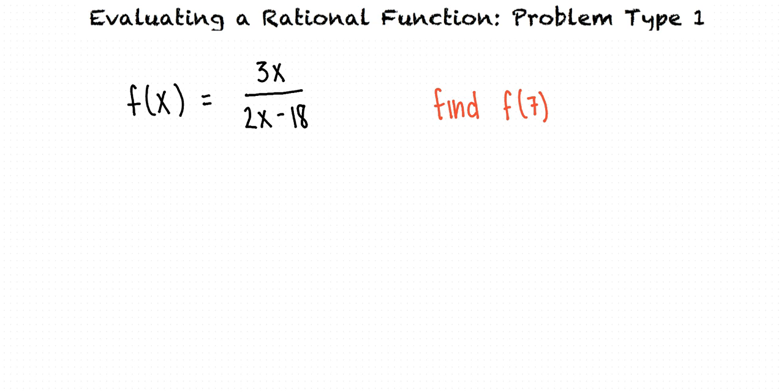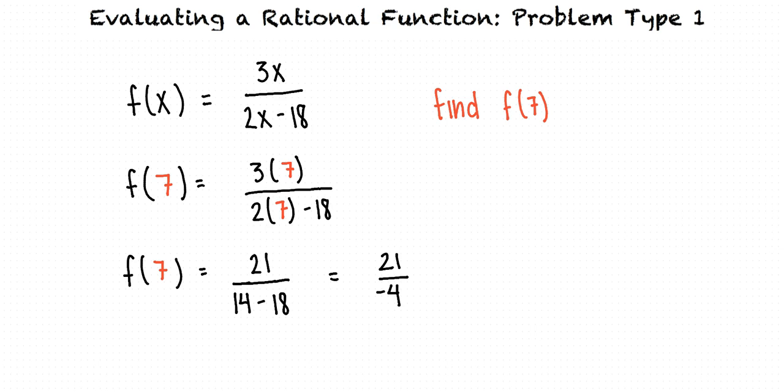To do this, we must substitute 7 for x in our function. Next, we simplify our numerator and denominator, and we see that our final answer is f of 7 equals negative 21 over 4.